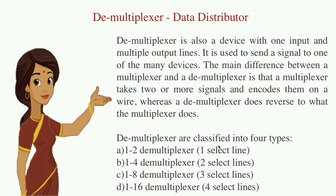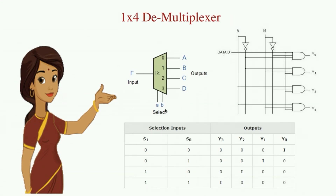The select lines are chosen based on the number of output lines — if it is 2 to the power 1 there is one select line, 2 to the power 2 there are two, 2 to the power 3 there are three select lines. This is the schematic representation, this is the logic diagram, and this is the truth table of a demultiplexer — there is one input data, two select lines, and four outputs generated. We are going to implement this circuit using Logisim software.